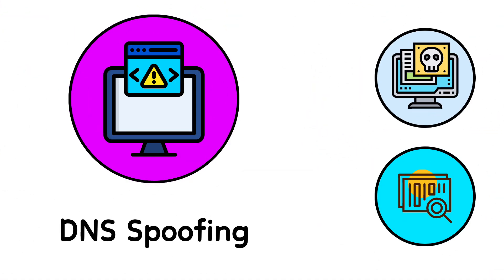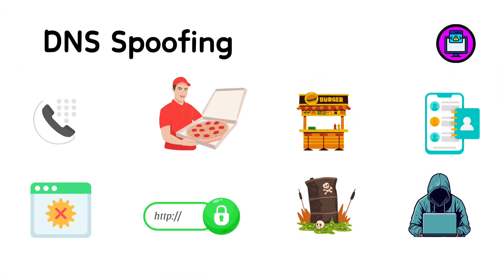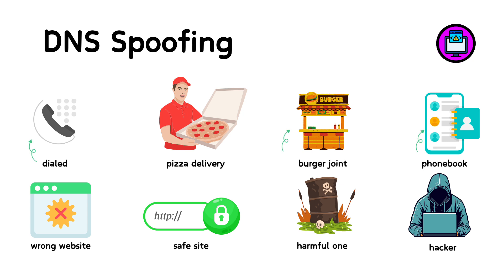5. DNS Spoofing. Imagine if you dialed the phone number for your pizza delivery but got connected to a burger joint instead because someone tampered with your phone book. DNS spoofing is similar — it tricks your computer into visiting the wrong website by changing the internet phone book your computer uses. You think you're visiting a safe site, but you're really connecting to a harmful one controlled by a hacker.